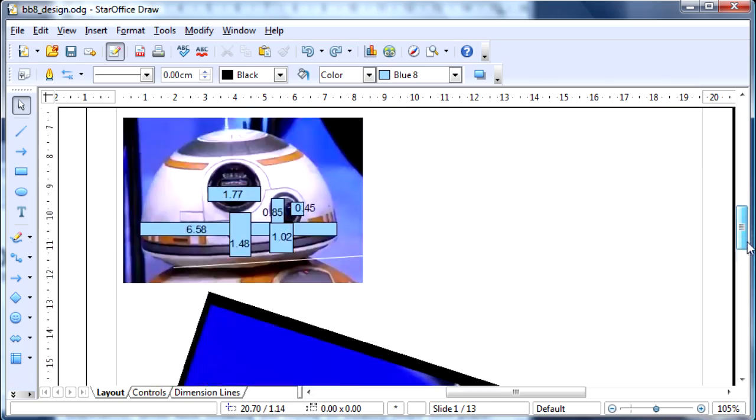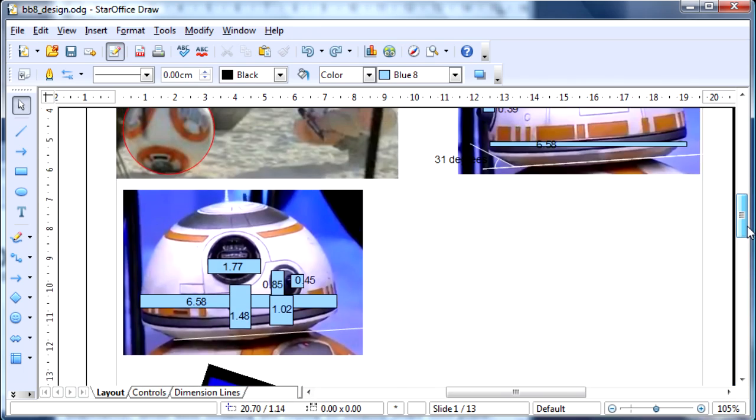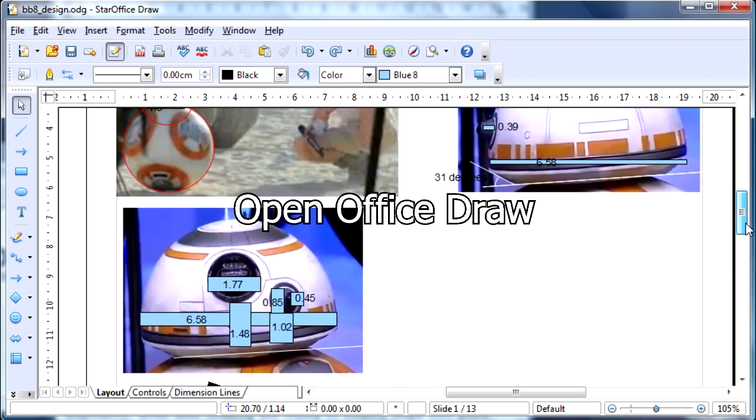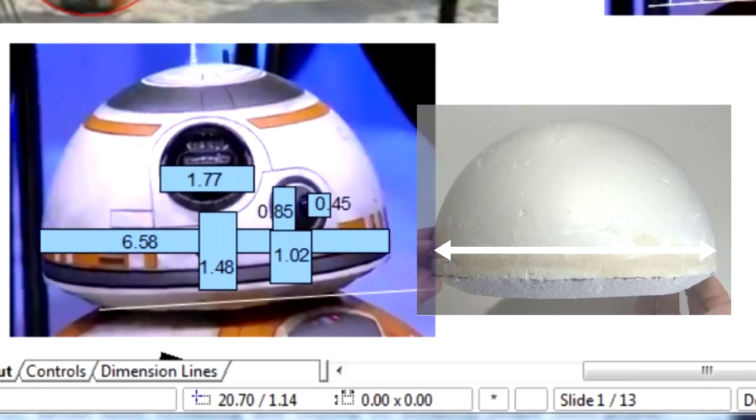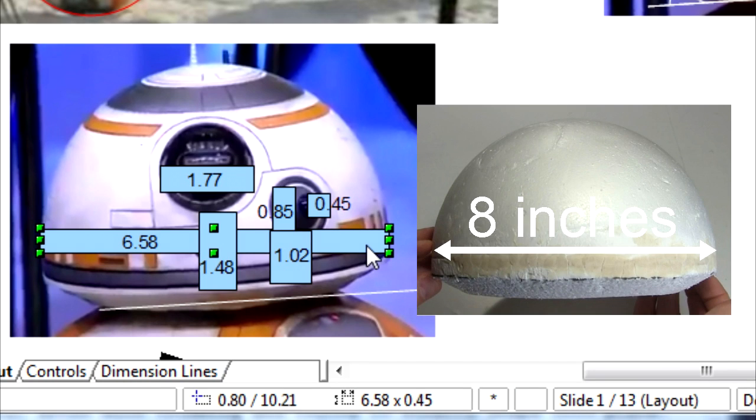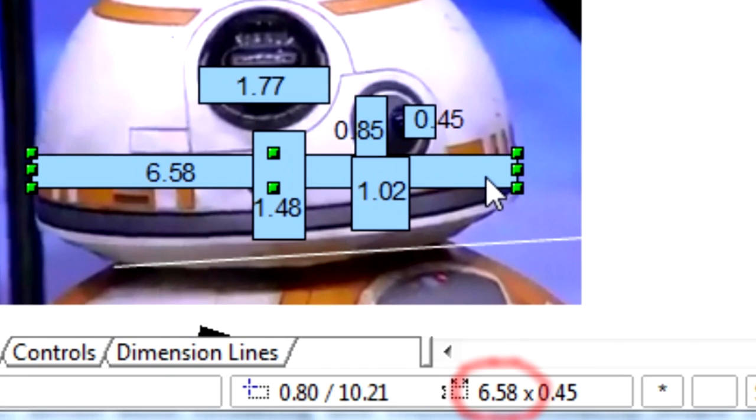To get the dimensions, I took snapshots from various videos, and brought them into a drawing program. Open Office Draw in this case. I knew my styrofoam head was 8 inches in diameter, and that this corresponding rectangle is 6.58 units wide.